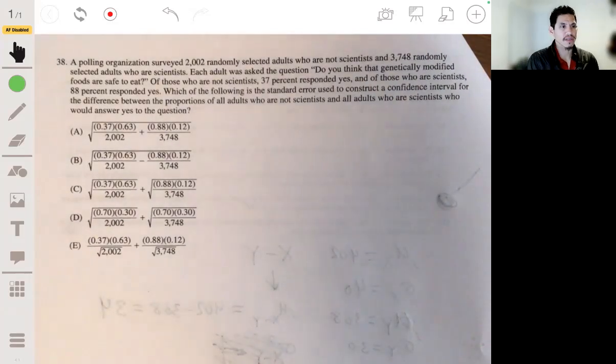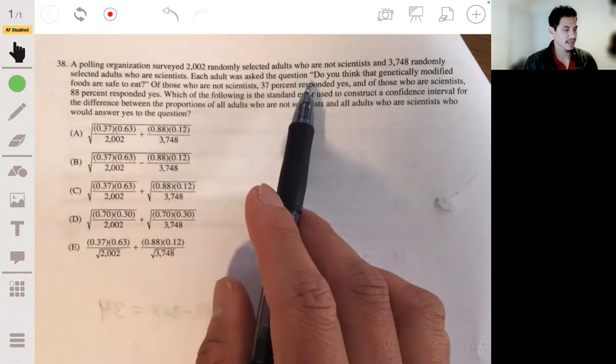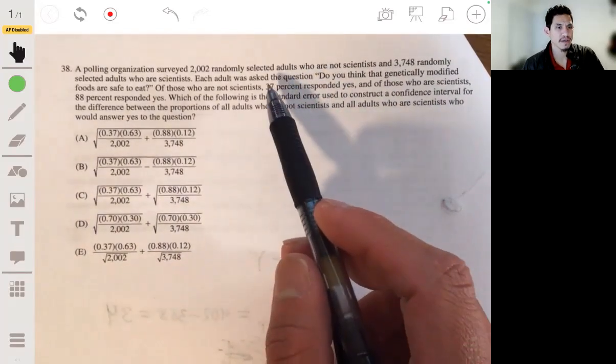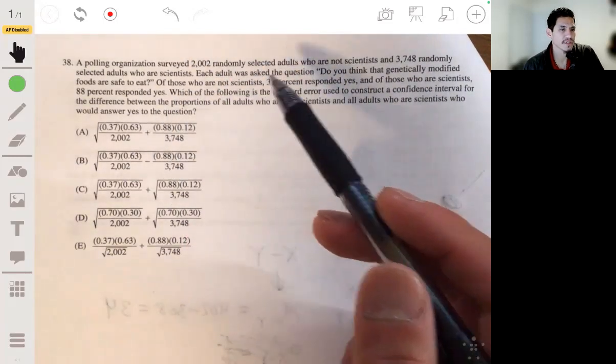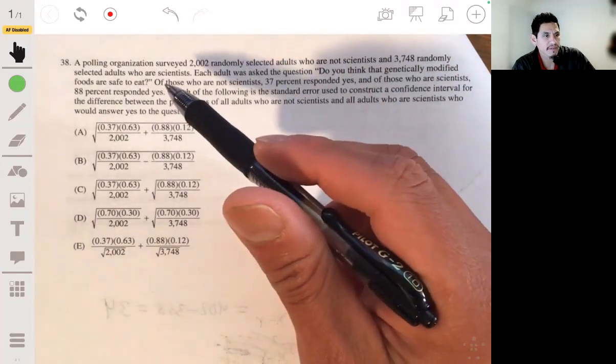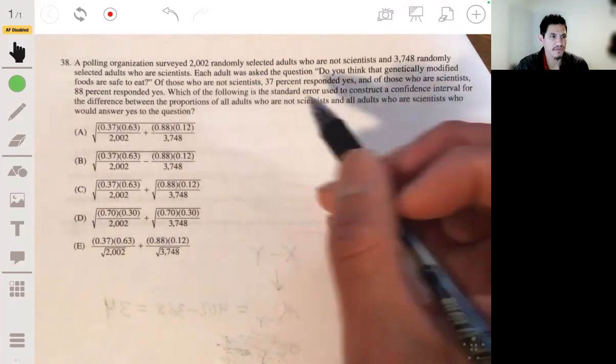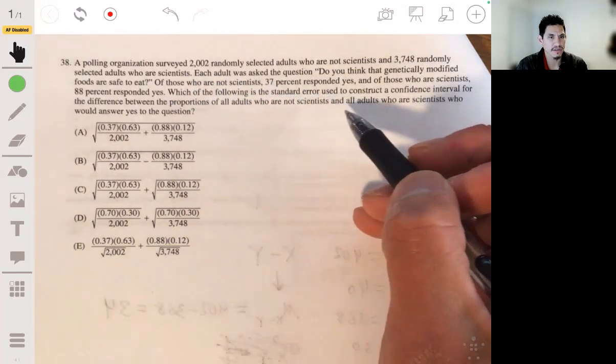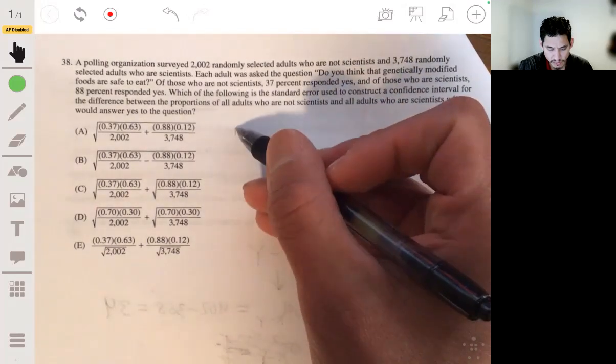38. The polling organization surveyed 2002 randomly selected adults who are not scientists and 2,748 randomly selected adults who are scientists. Each adult was asked the question, do you think that genetically modified foods are safe? Of those who are not scientists, 37% said yes, and those who are scientists, 88% responded yes. Which of the following is the standard error used to calculate a confidence interval for the difference between proportions of all adults who are not scientists and all adults who are scientists?